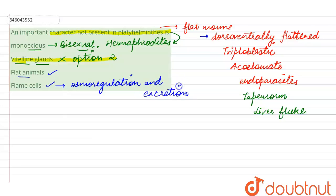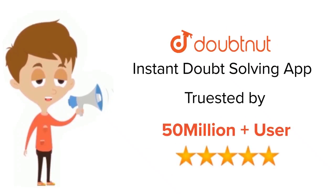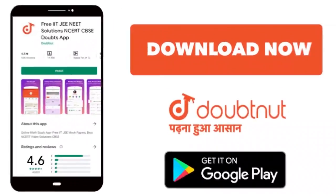This is all about this query. Option number two is the right answer for this question. That means vitelline glands is not present, rest all the three options are correct for this particular organism, that means the group of Platyhelminthes. This is all about this query, thank you. For class 6 to 12th, IIT, and NEET level, trusted by more than 5 crore students, download Doubtnut app today.